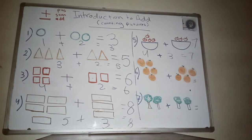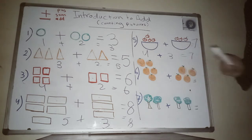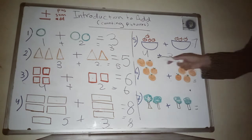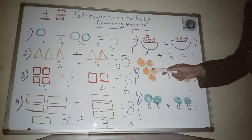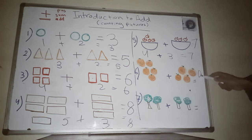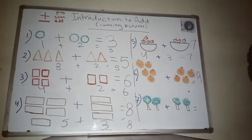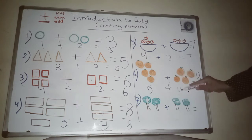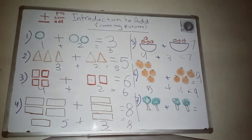Another example: I have five oranges and four more oranges. How many oranges do we have? Let's count — one, two, three, four, five, six, seven, eight, nine. I have nine oranges. So five plus four equals nine. Very good!